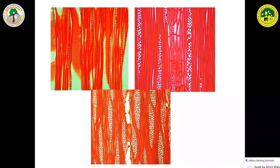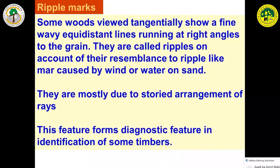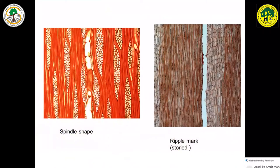Ray width varies: in some, rays will be very fine; in some, medium; in some, broad — all these things have to be noted during identification. In some timbers, ripple marks are present. Most timbers have rays arranged haphazardly, looking like spindles on the tangential side. But in some, they are arranged in rows — ripple marks means all the rays are arranged in a row, looking like bricks arranged in a pattern. This is present only in a few timbers.